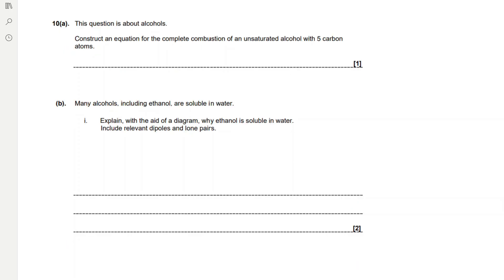This question is about alcohols: construct an equation for the complete combustion of an unsaturated alcohol with five carbon atoms. The alcohol is pentanol with molecular formula C₅H₁₂O, reacting with oxygen to form carbon dioxide and water. Start with the carbons — five in front of CO₂. Then the hydrogens — six in front of the water. Then the oxygens: ten in CO₂ and six in water is sixteen, minus one for the oxygen in the alcohol gives fifteen. We need fifteen from the oxygen on the left, so that's 7½, which we represent as a fraction. Make sure to represent it as a fraction, as 7.5 can appear wrong on exam papers.